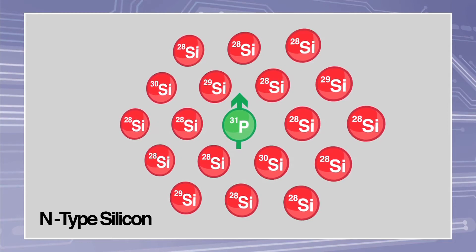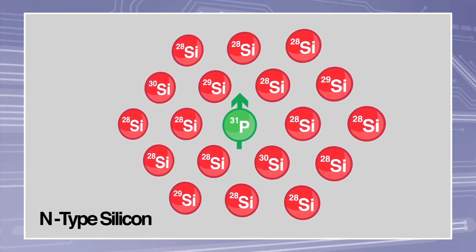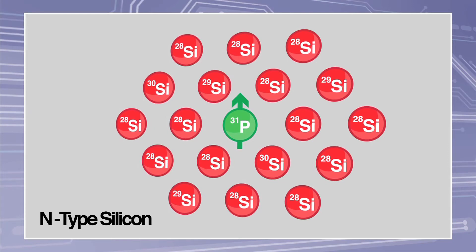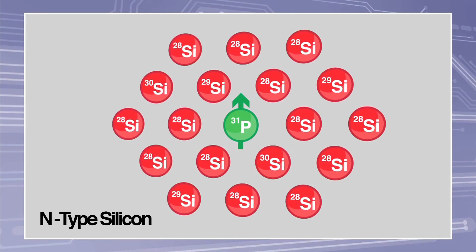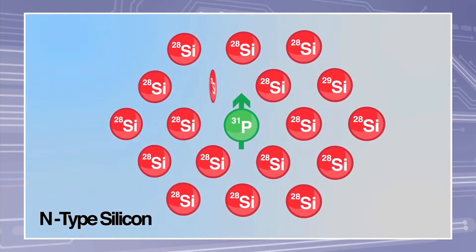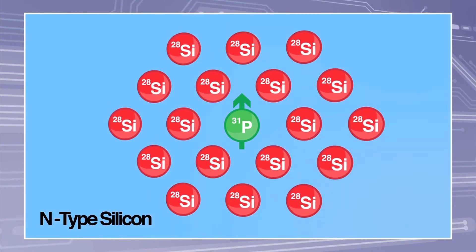But a group led by Professor Kohei Ito at Keio University and Professor Mike Thewalt at Simon Fraser University has succeeded in making a truly vacuum-like environment within silicon by removing this non-uniformity by ensuring that all atoms in the silicon are the stable isotope of silicon-28.